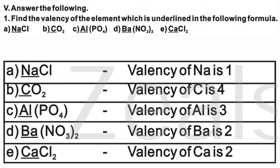Answer the following. Find the valency of the underlined element in the following formulae: InCl — valency of In is 1; CO₂ — valency of carbon is 4; AlPO₄ — valency of Al is 3; Ba(NO₃)₂ — valency of barium is 2; CaCl₂ — valency of calcium is 2.